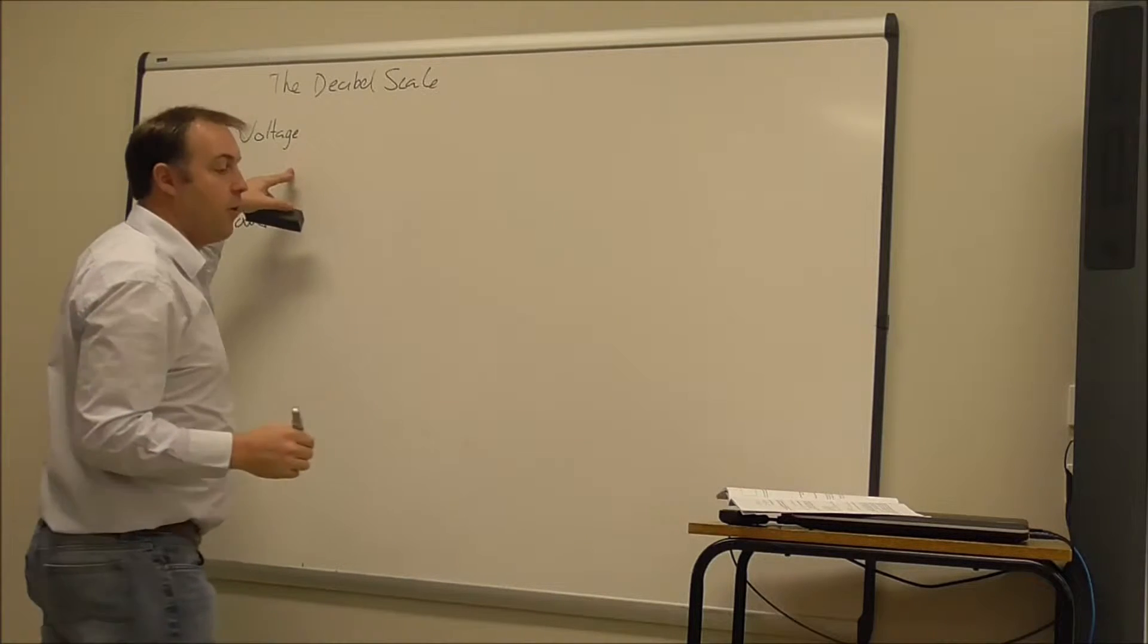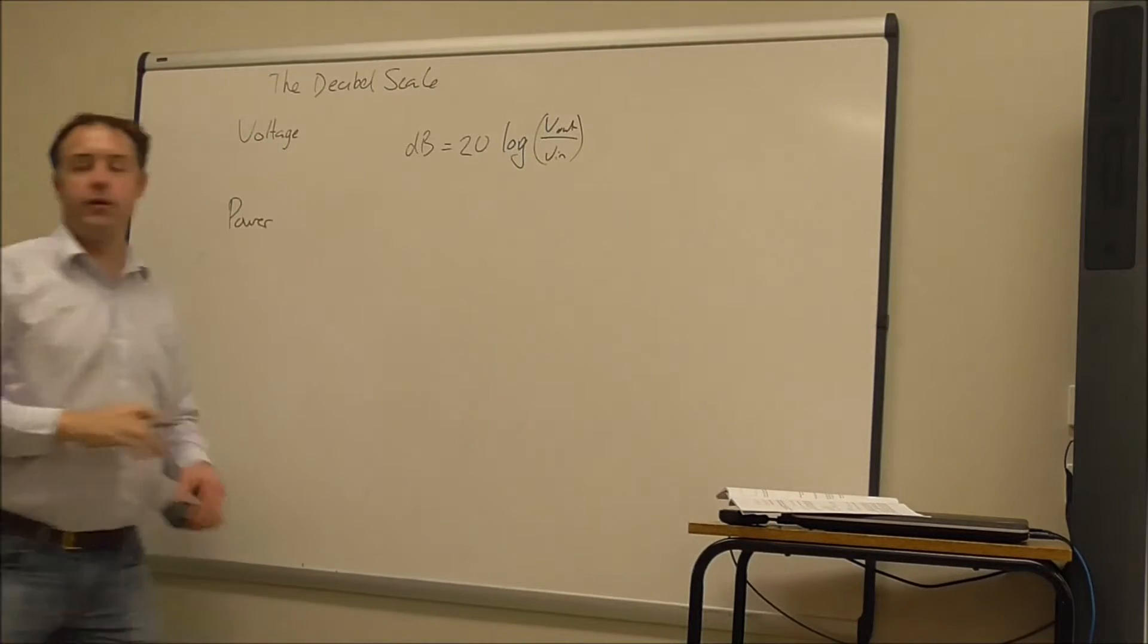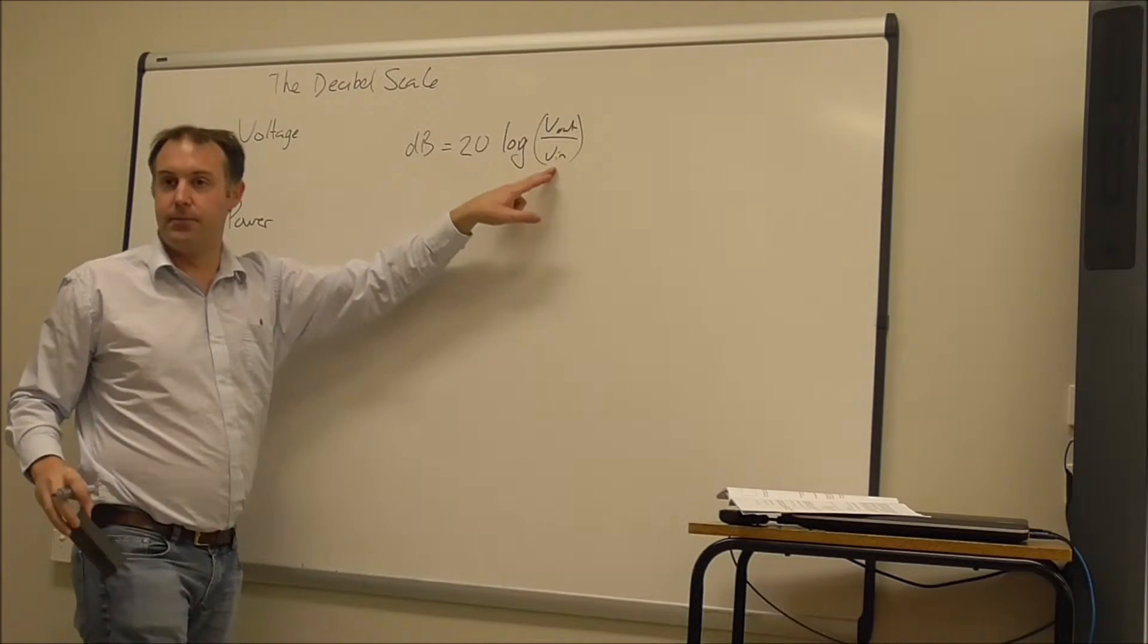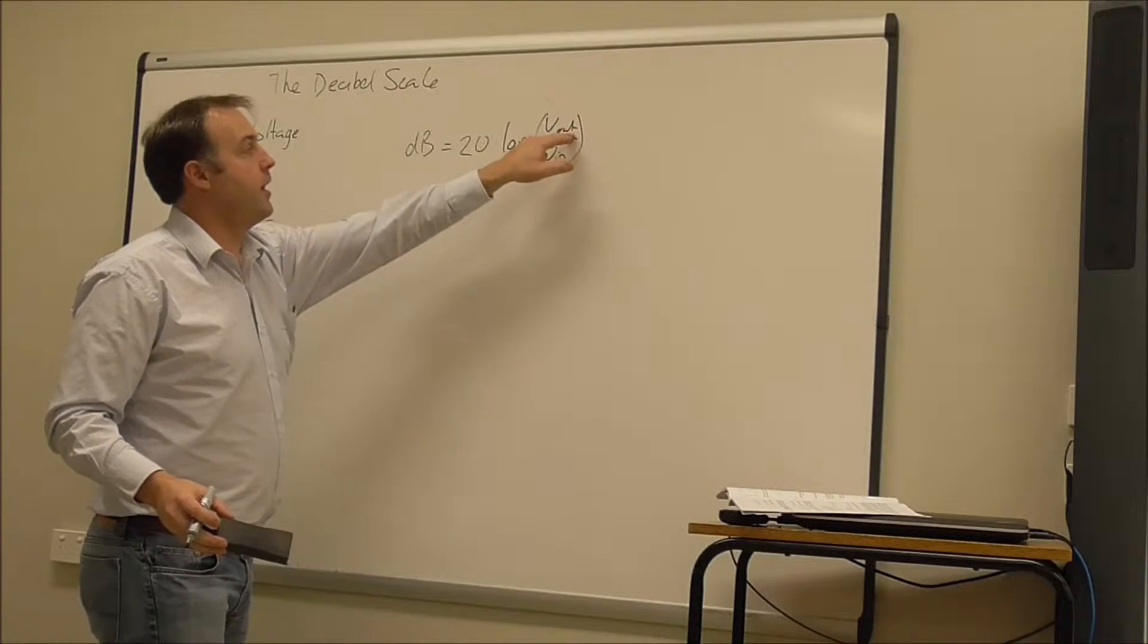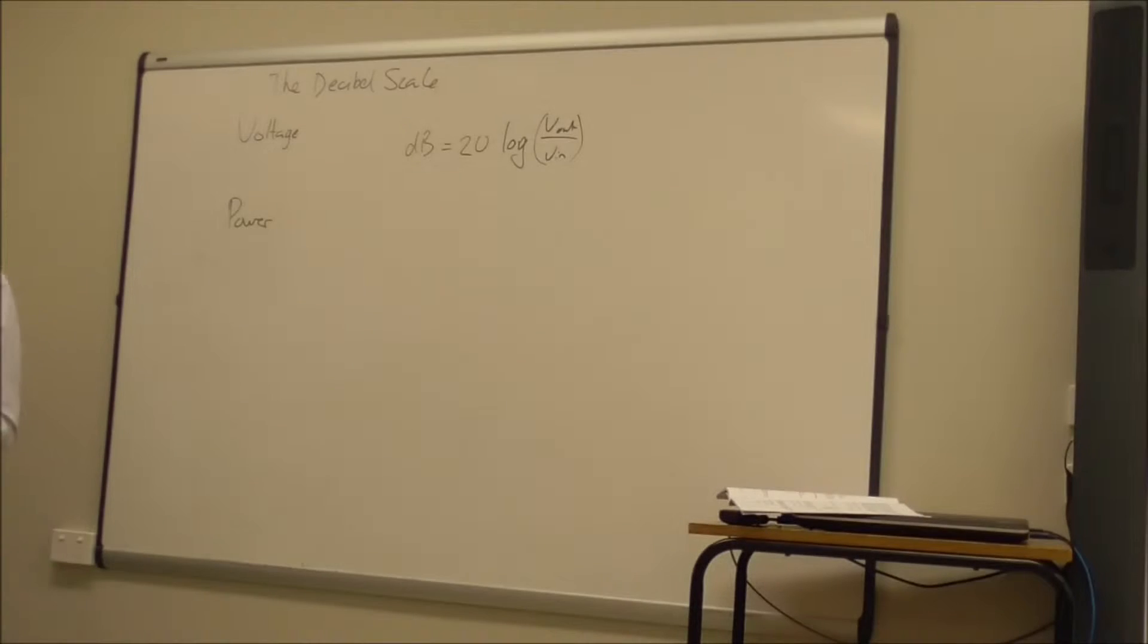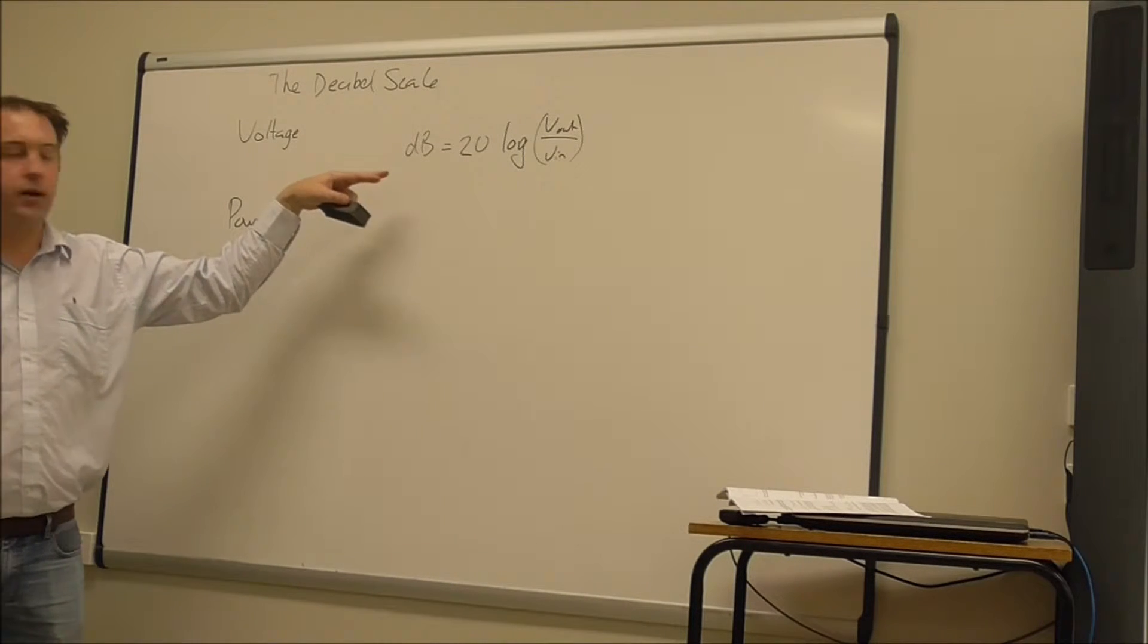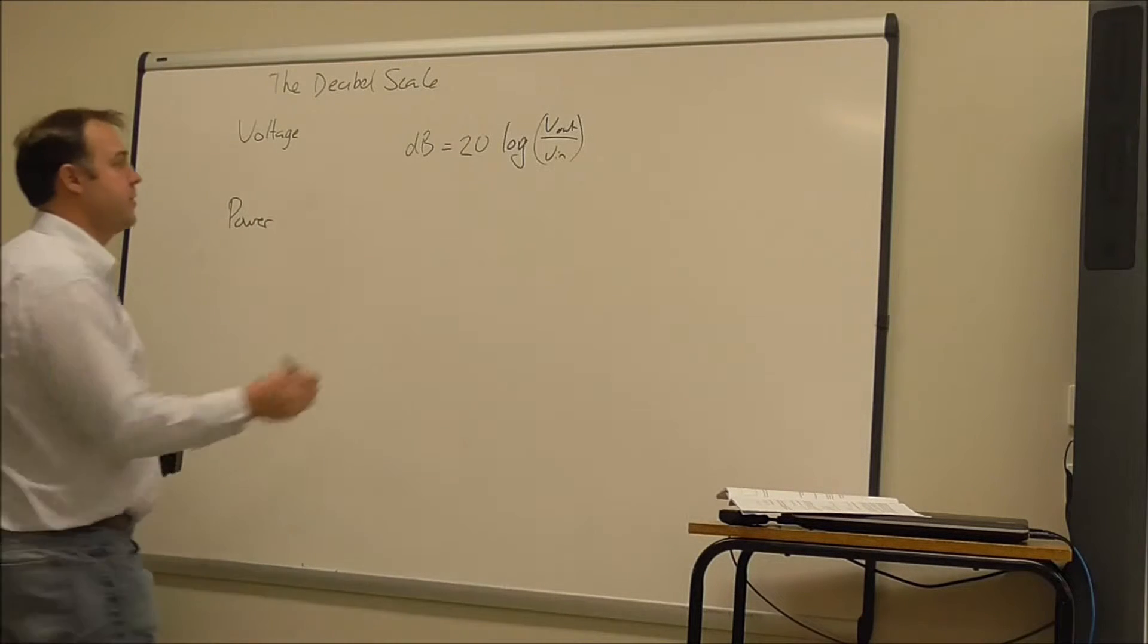And so I'll look at the formula for voltage. So if we had a filter and it had an input voltage of some voltage and it gave me an output voltage of something, we can calculate the decibel value for it. So let's do some examples.